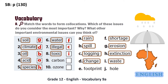Environmental issue number nine is carbon footprint, which refers to the amount of carbon dioxide released into the atmosphere as a result of the activities of a particular individual, organization, or community. So letter E is the answer. The final issue, number ten, is ozone hole — when people pollute the atmosphere with chemicals containing chlorine and bromine, they cause the ozone layer to deplete and form a hole in this protective layer around the planet.